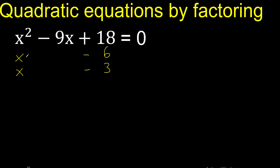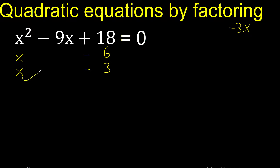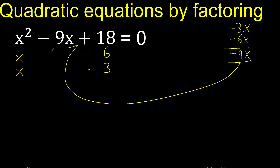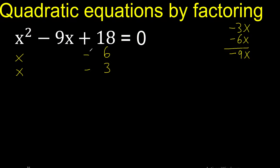x multiplied by minus 3 is minus 3x, and x multiplied by minus 6 is minus 6x. Minus 3x plus minus 6x is minus 9x — equal. Therefore it is correct.